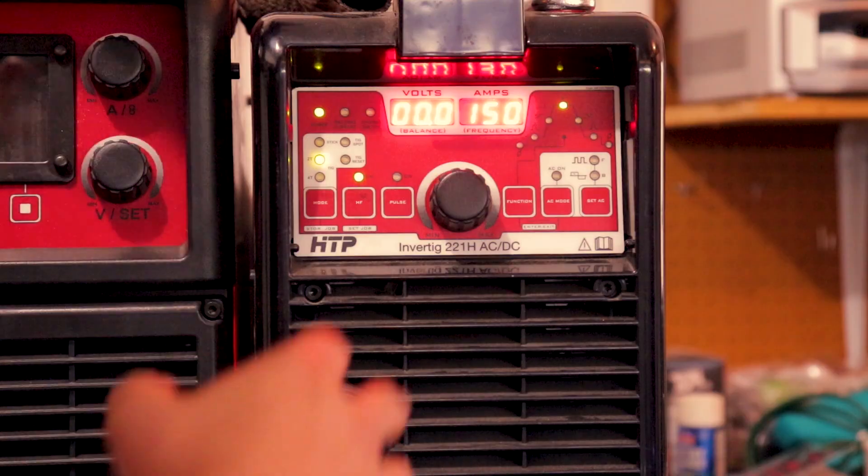So today I'm going to be teaching you how to get this stack of dimes look when TIG welding regular steel. This is a technique that a bunch of my buddies use for building trophy trucks, buggies, suspension. All the off-road guys really seem to like this style of welding.